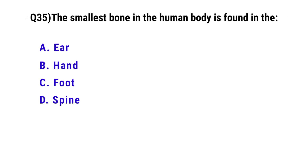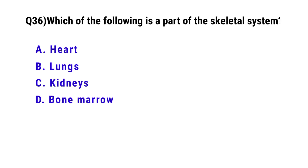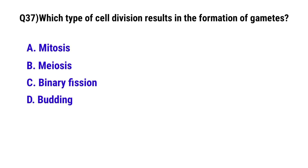Question 35: The smallest bone in the human body is found in? The correct option is A: the ear. Question 36: Which of the following is a part of the skeletal system? The correct option is D: bone marrow. Question 37: Which type of cell division results in the formation of gametes? The correct option is B: meiosis.